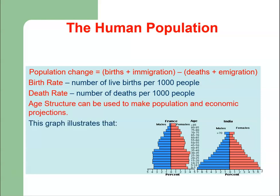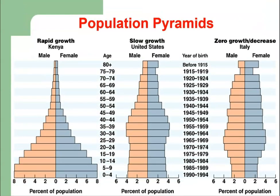In this graph we see two countries, France and India. France shows an almost steady increase, while India shows rapid population increase. India currently ranks number one in terms of population size, having surpassed China recently. In another diagram we see rapid growth in the case of Kenya, slow growth in the case of the United States, and zero growth or decrease in the case of Italy.